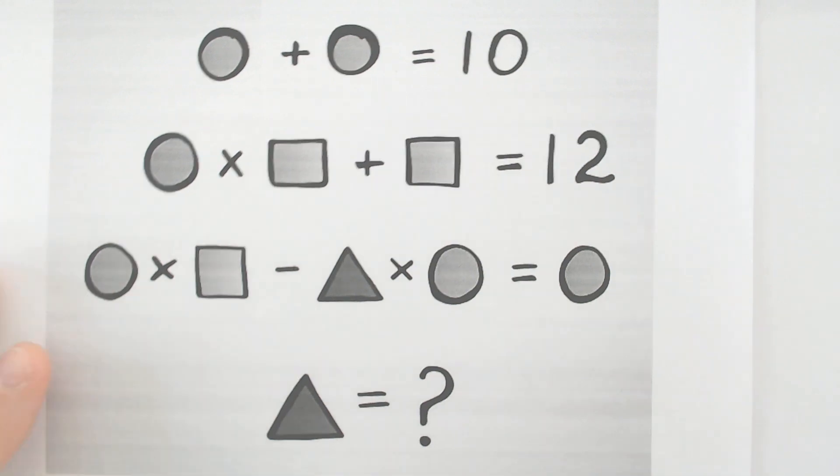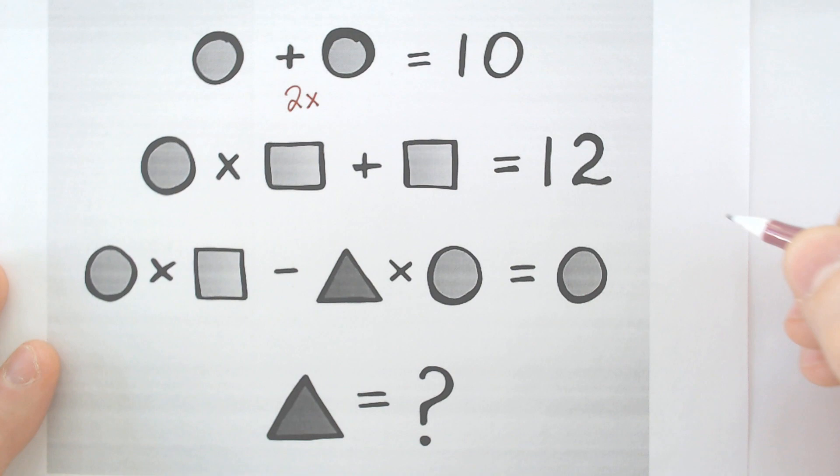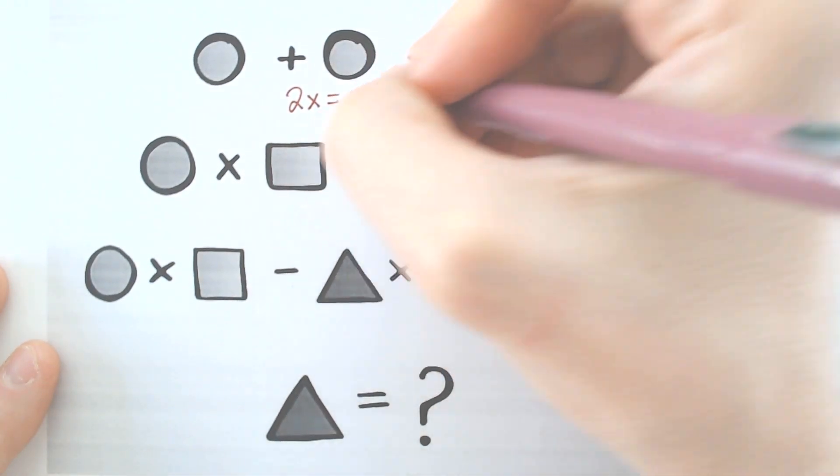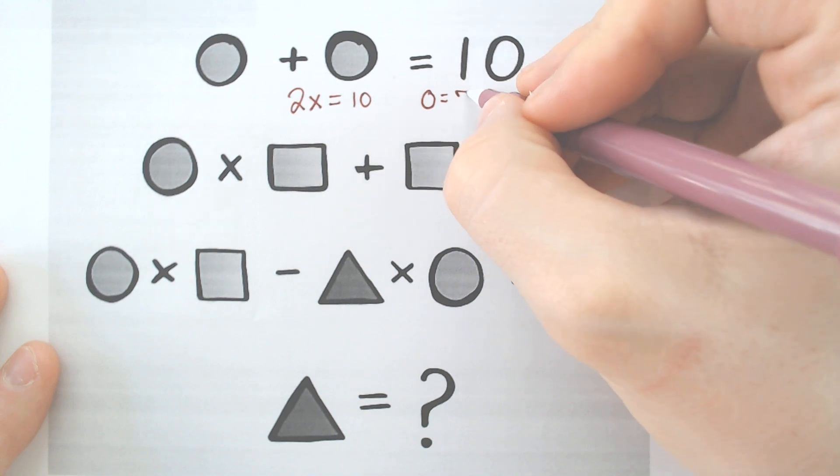But I'm going to do it algebraically too. Because we have two of the circles, I'm going to call that 2x would equal 10, which means that the circle, which is x, would equal 5.